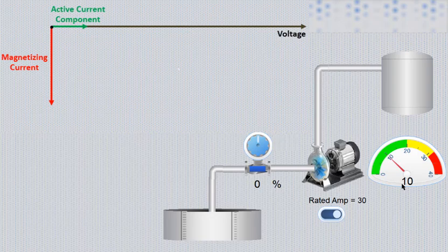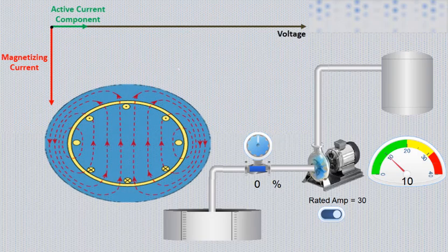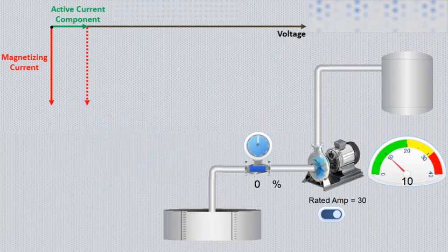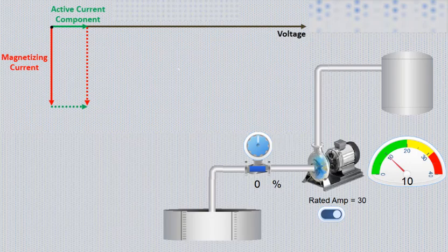Magnetizing component of current is responsible of creating magnetic field inside induction motor. As magnitude of reactive component of current is higher than active component, as a result power factor of induction motor is very low at no load condition.